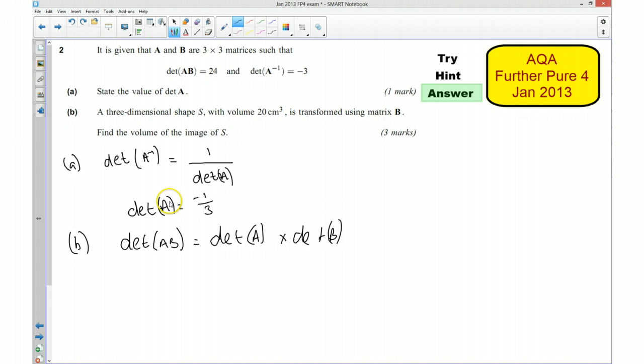Okay, so we know the determinant of A is minus a third and we know the determinant of AB is 24. And that means that the determinant of B is going to be equal to minus 72.